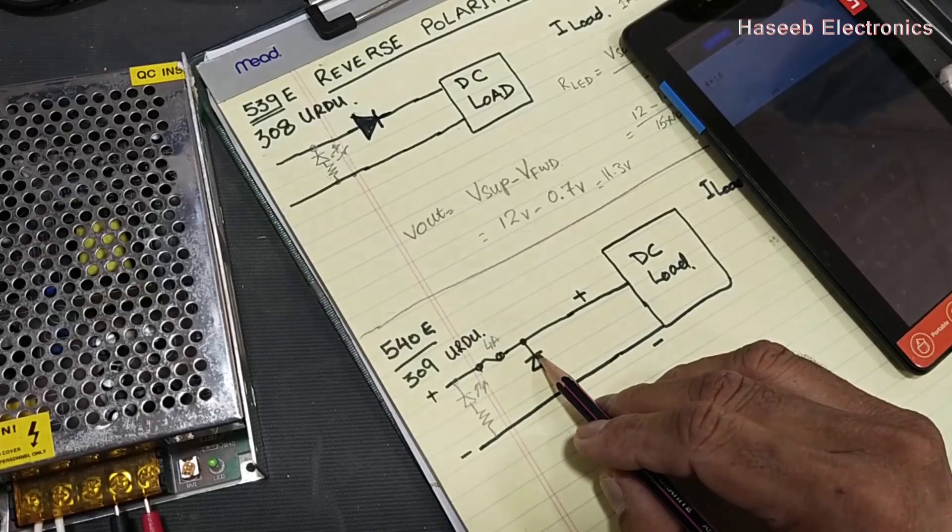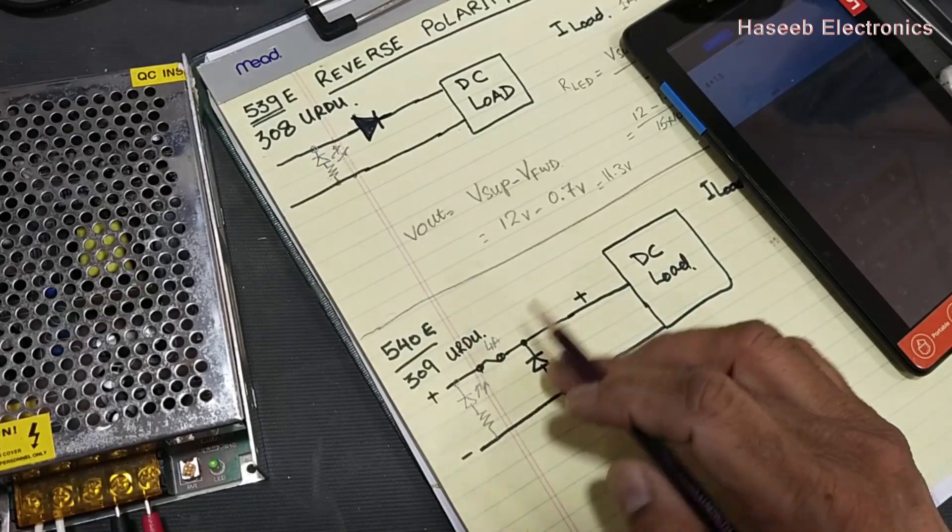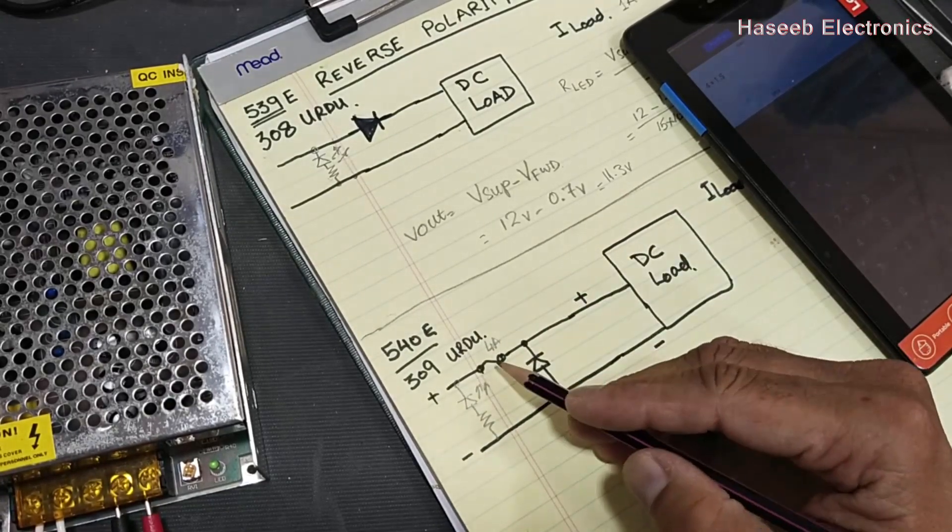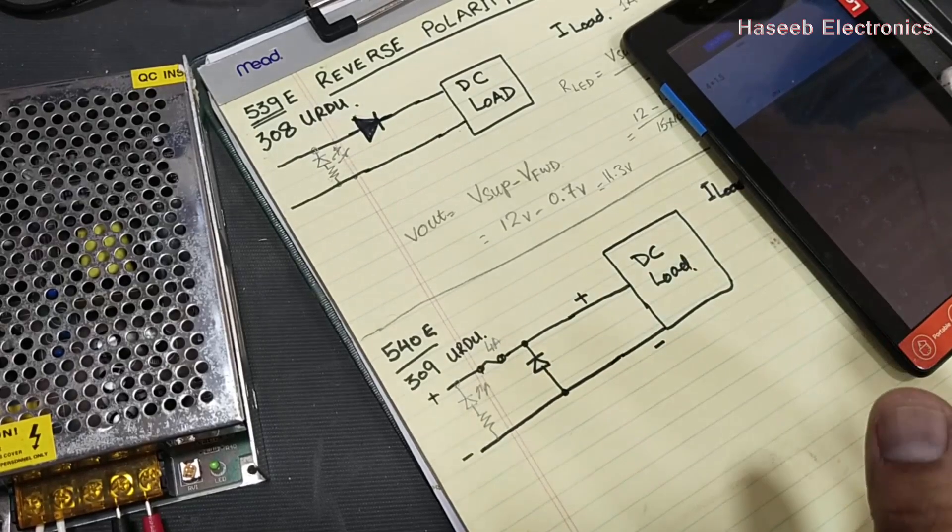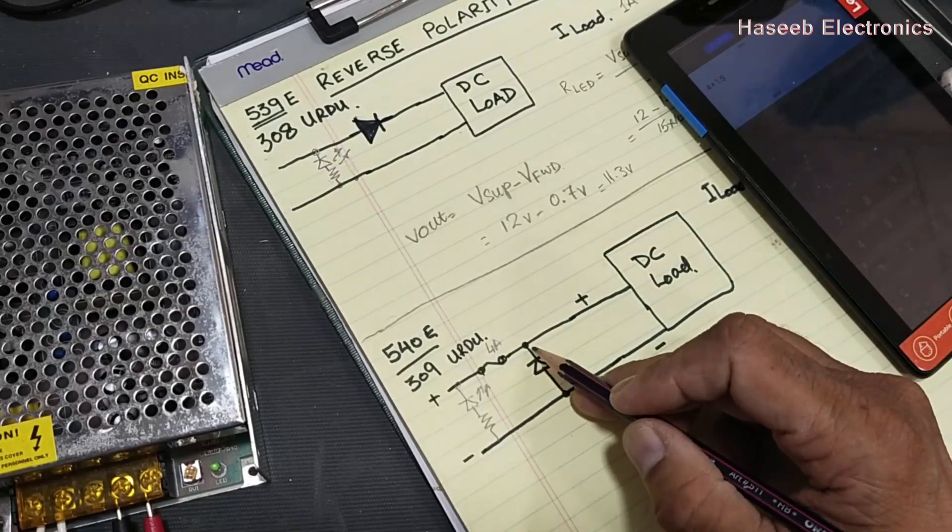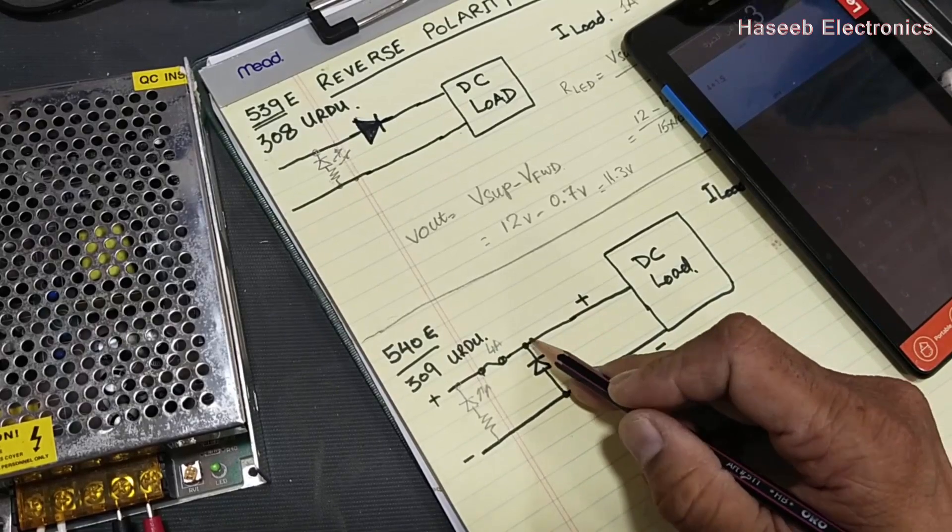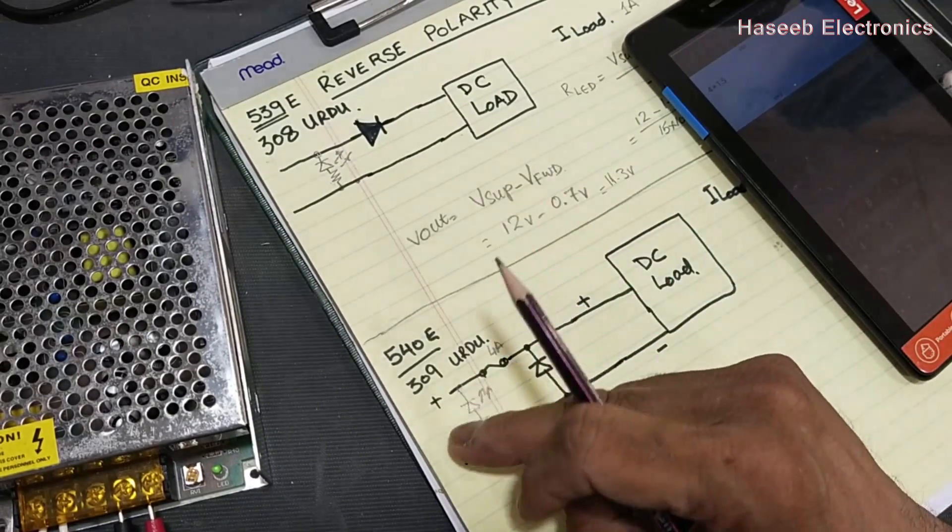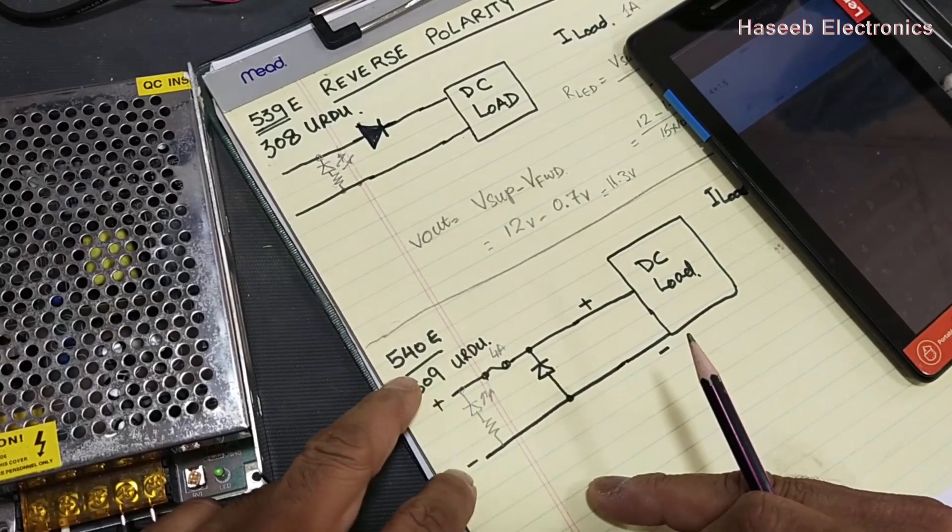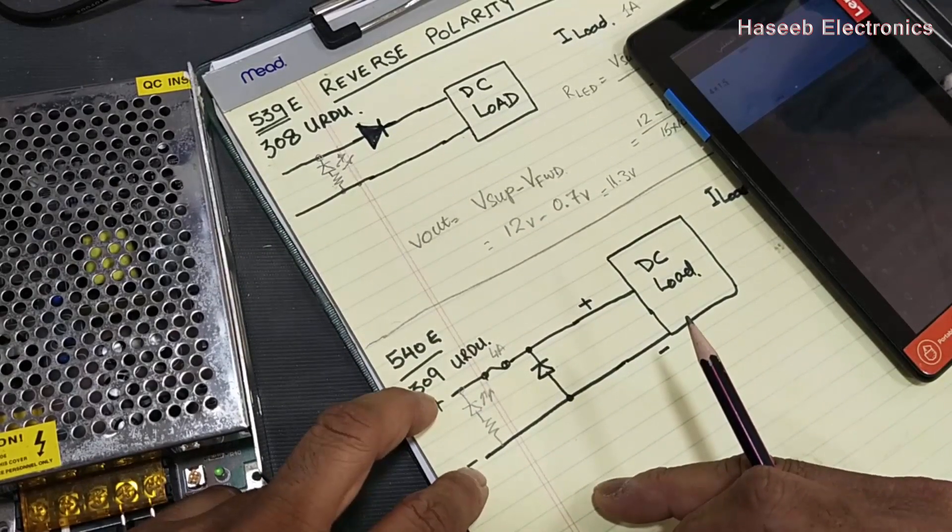So that the diode will not damage, it will immediately blow this fuse. When we will reverse the polarity here, the diode will forward bias. In that condition it will cause maximum current to flow, so it will blow this fuse.